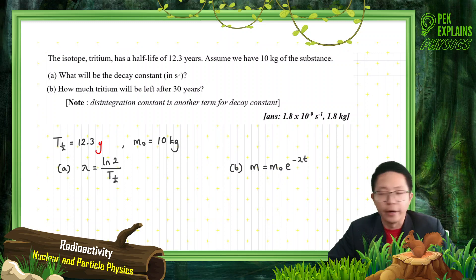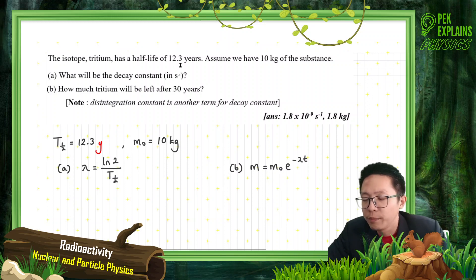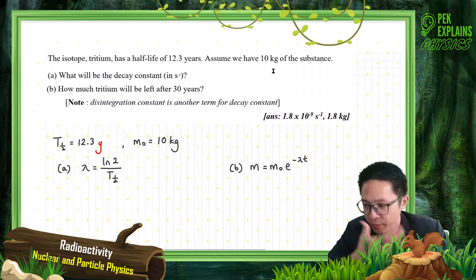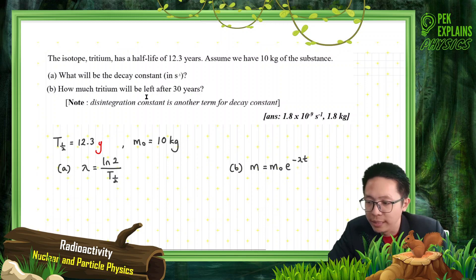The isotope tritium has a half-life of 12.3 years. Assume we have 10 kilograms of the substance. Part (a): find the decay constant in per second. Part (b): how much tritium will be left after 30 years?